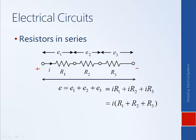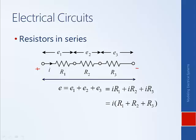The fact that the currents are all equal means we can factor them out. We can represent the equivalent resistance as the total voltage divided by the current. Using Ohm's law, dividing through by I, we get that the equivalent resistance equals E over I, which equals the sum of the resistances. In summary, the equivalent resistance of resistors in series is just the sum of the individual resistances.